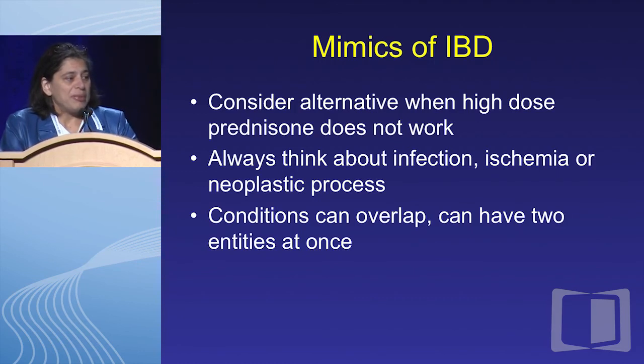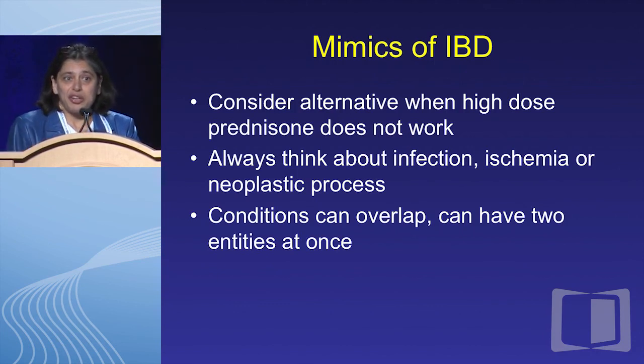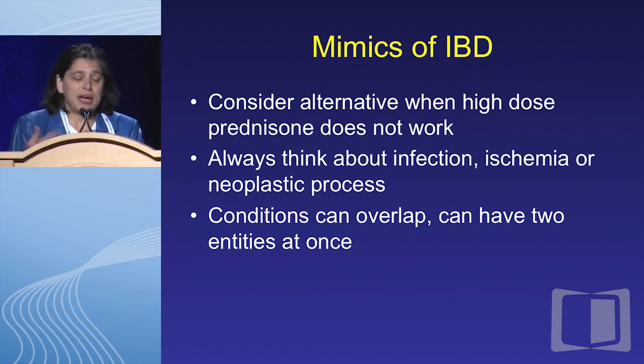Last point — mimics of IBD: consider an alternative diagnosis when high-dose prednisone doesn't work, both for initial diagnoses and for IBD patients developing new GI symptoms. Always think about infection, ischemia, and neoplasm in your differential for IBD, because we're internists first and gastroenterologists second. Don't forget that conditions can absolutely overlap — a patient can have two entities at once — and the most common scenario is IBD overlapping with IBS. Thank you very much.